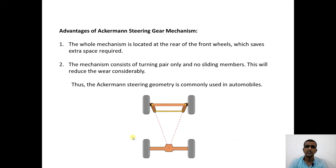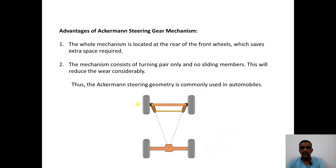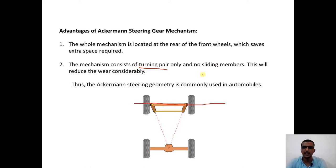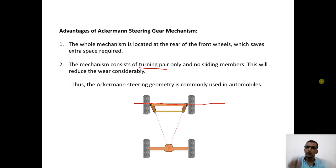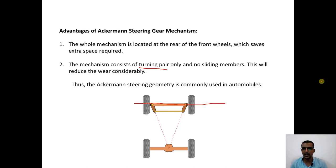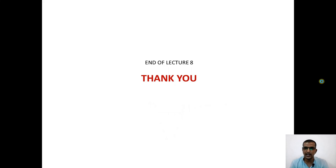What are the advantages of the Ackerman steering gear? The whole mechanism is located on the rear of the front wheels, saving much space. It contains only turning pairs and there are no sliding pairs. In contrast, the Davis steering gear mechanism contains two sliding pairs — so even though it satisfies the fundamental equation, there will be more wear and tear compared to the Ackerman. Thus, the Ackerman steering geometry is commonly used in automobiles because it requires no extra space and involves only turning pairs, resulting in less wear and tear. That is the end of lecture eight. Thank you.